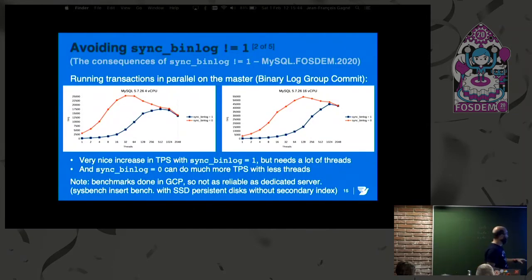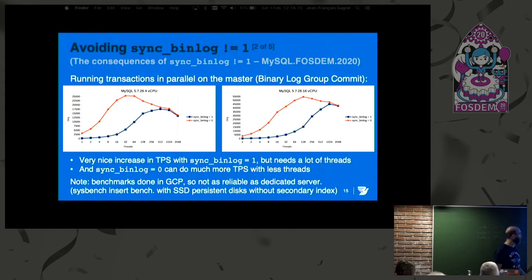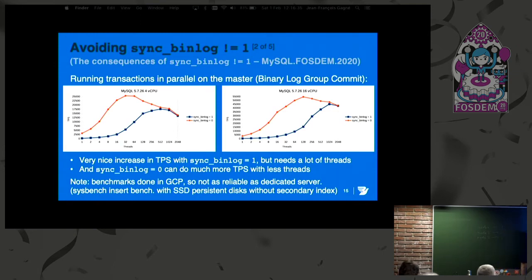Remembering the numbers: very low transaction throughput with Sync Binlog equals 1 single-threaded. As we use more and more threads, we get better transaction throughput. With Sync Binlog equals 0 and single-threaded, we have a more decent throughput — around 3,000 — and this curve grows much faster. Even with multi-threaded on the master, we need 100 or 200 threads to match the throughput of Sync Binlog equals 0. This is with 4 vCPUs in Google Cloud, and with 16 vCPUs it scales a little more.